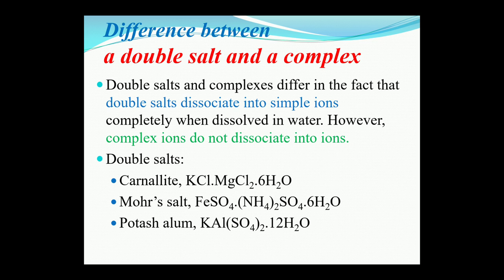The second example is Mohr's salt — very important. These formulas are very important, so please take a snapshot and practice. For chemistry, the more you practice, the clearer your concepts will become. Mohr's salt is FeSO₄·(NH₄)₂SO₄·6H₂O. And the last one is potash alum — also very important — which is KAl(SO₄)₂·12H₂O.